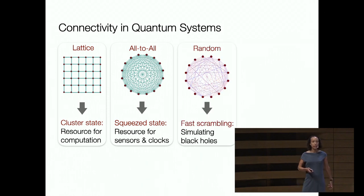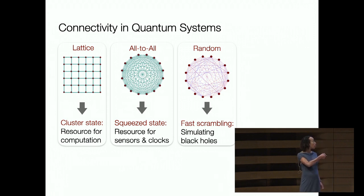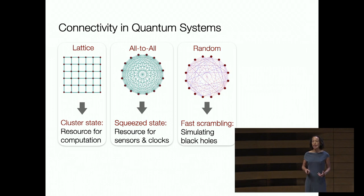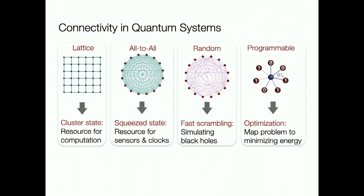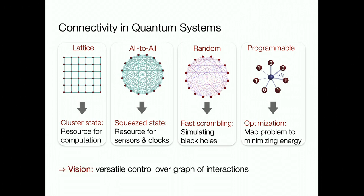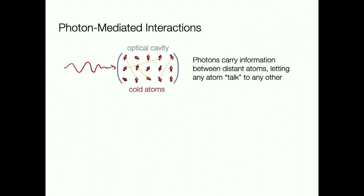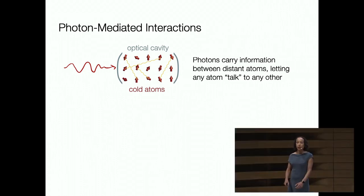If I add some randomness to these interactions, that could allow quantum information initially locally encoded in one qubit to rapidly become hidden in complex correlations and entanglement—a model for what happens to information falling into a black hole. With a high degree of programmability, I might take a real-world optimization problem and map it to minimizing the energy of a well-controlled quantum system. We would love to have more versatile control over the graph of interactions in cold atom systems.